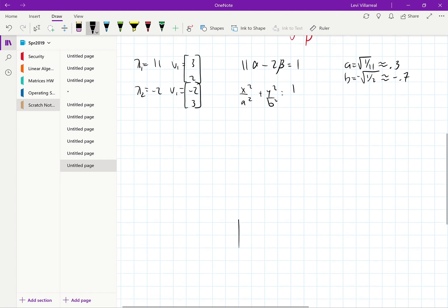And so the way we graph it is pretty similar because we do the same thing to find the axes. So, since our coordinates are 3 and 2, I'm going to do roughly 3. So, for our alpha, our coordinate matrix is 3, 2.